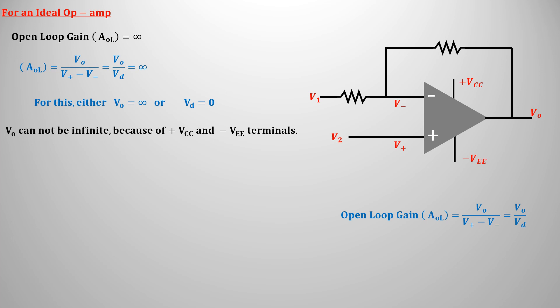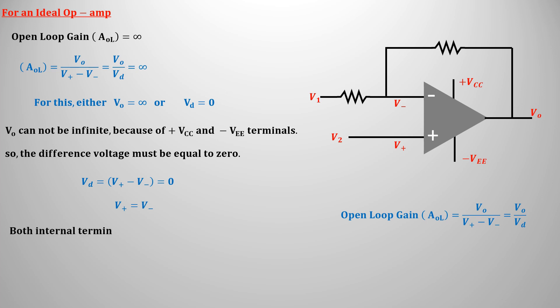Since the output voltage cannot be infinite, for the gain to be infinite, the difference voltage must be zero. This means that the internal non-inverting and inverting terminals of the operational amplifier should be at the same potential, whose difference equals zero. Any terminal can be at the same potential only if both terminals are directly connected to each other. In this way, both internal inverting and non-inverting terminals of an operational amplifier are considered to be connected to each other — but this connection is not real.